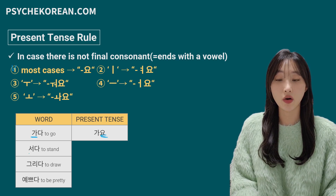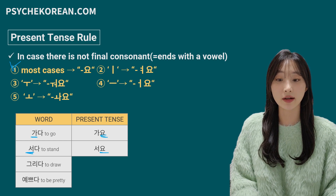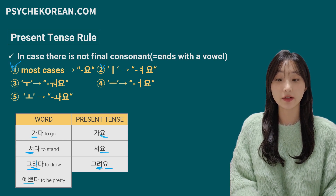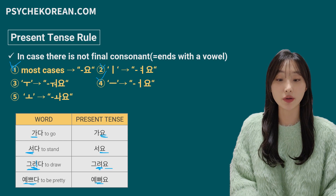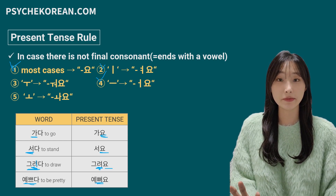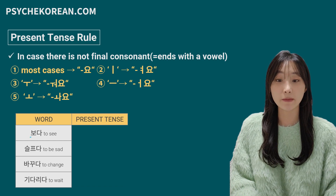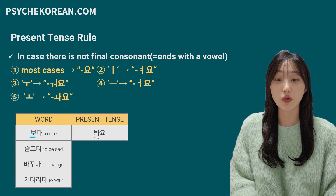서다 — 어 vowel, first case, so just add 요: 서요. 그리다, 'to draw' — the vowel is 이, so it follows the second rule: 이 changes to 여요, giving 그려요. 예쁘다, 'to be pretty' — 으 vowel, so 으 changes to 어요, giving 예뻐요. This might be a little difficult, so let's practice more. 보다, 'to see' — 오 vowel, fifth case, so 오 changes to 와, giving 봐요.